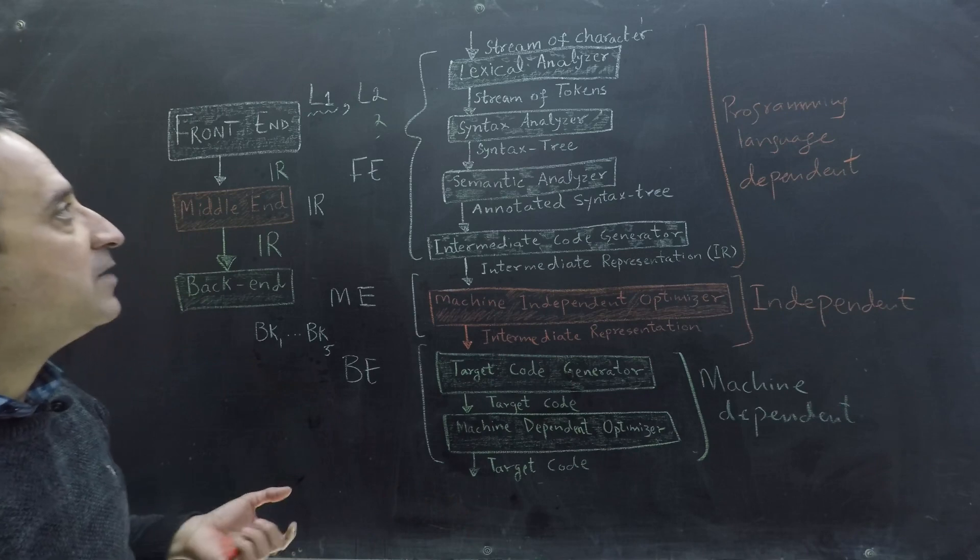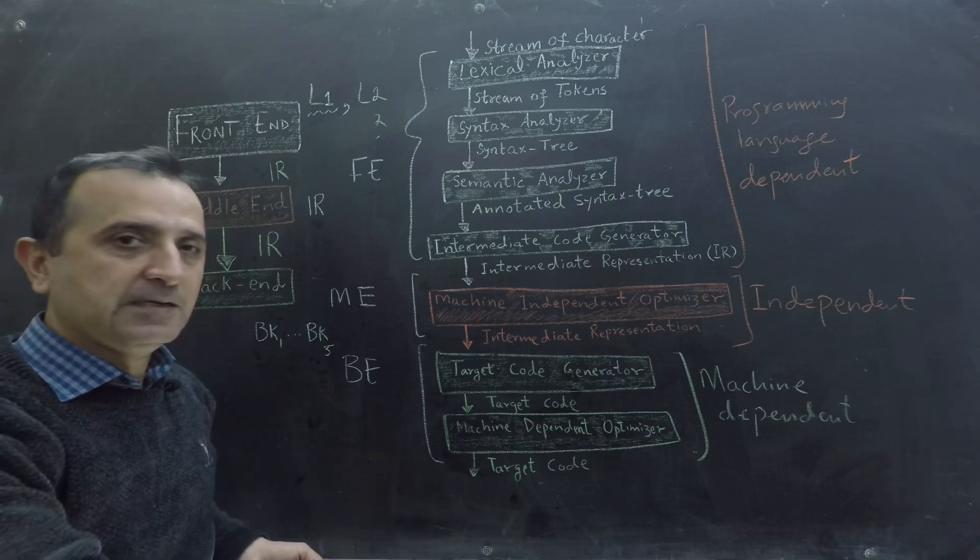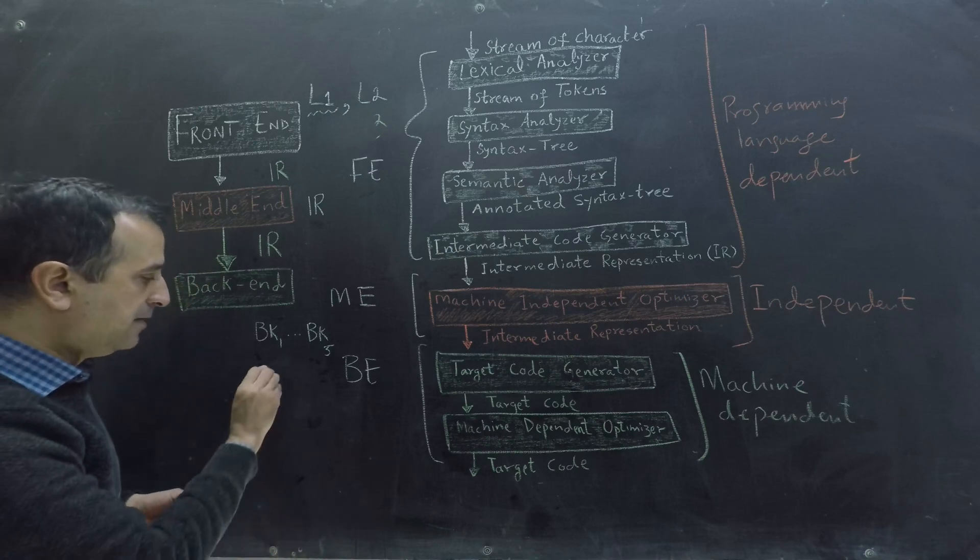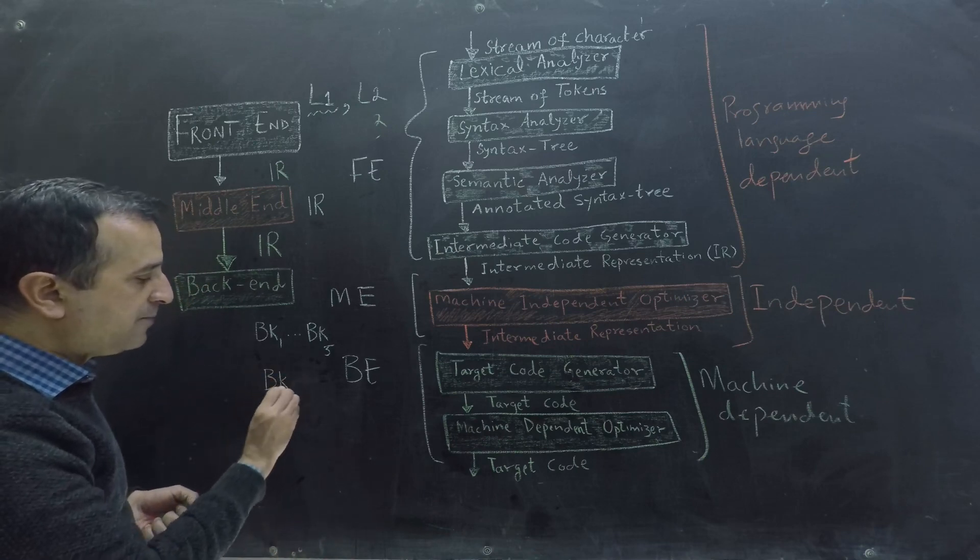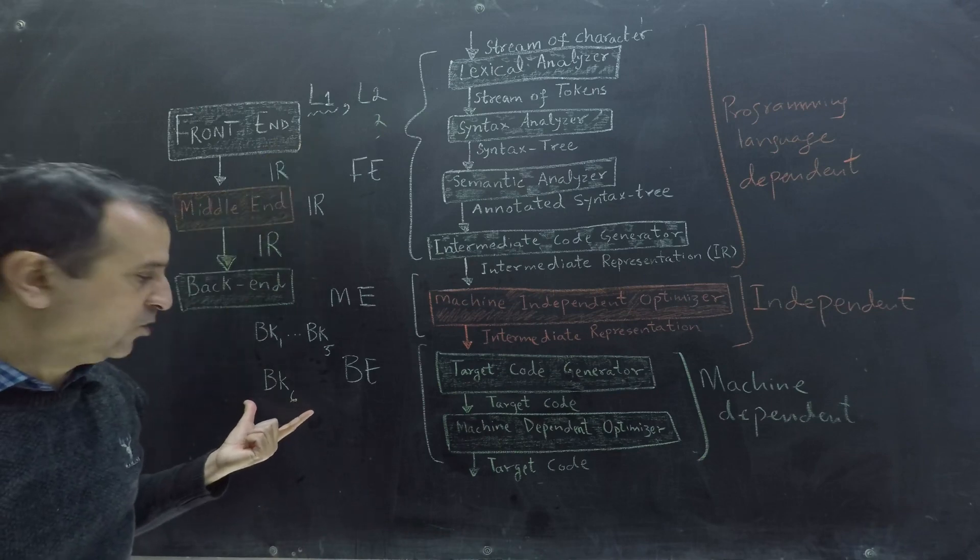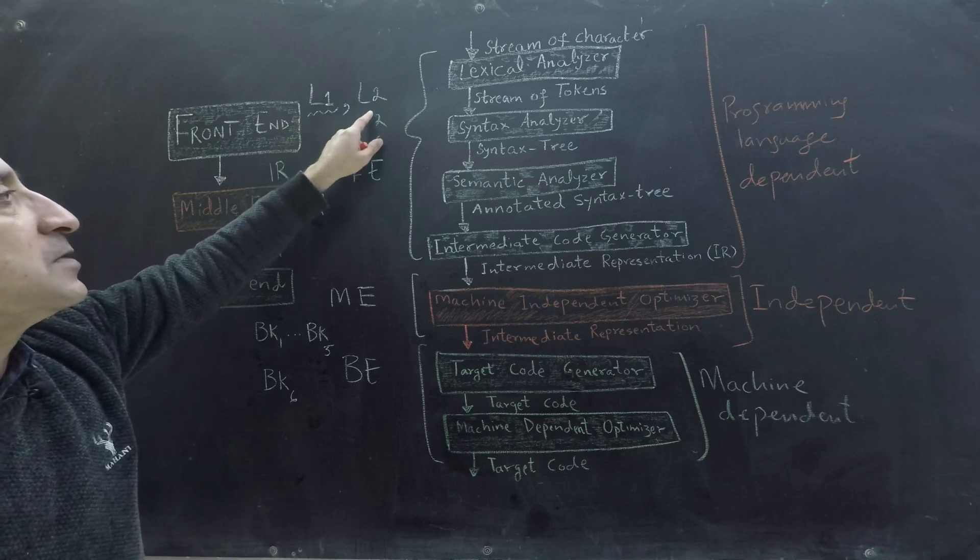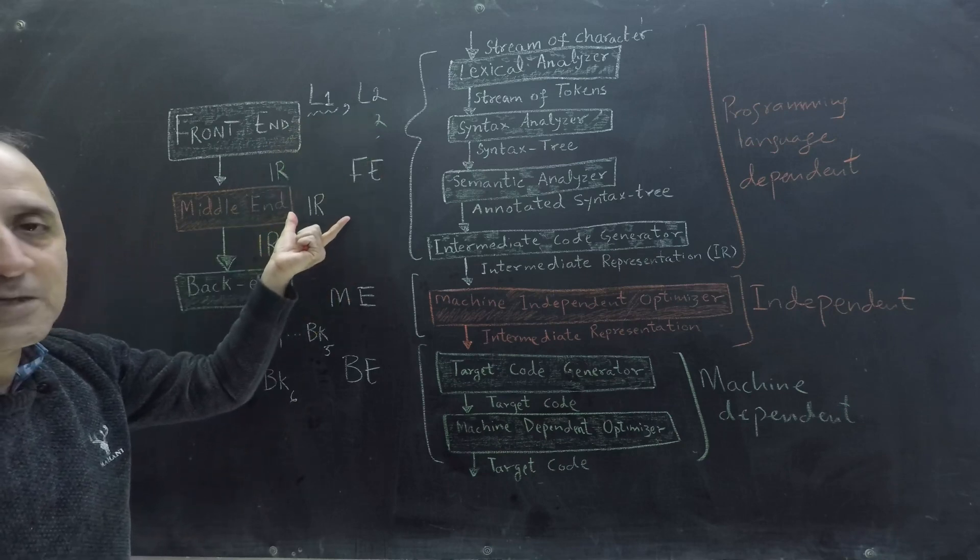However, if I have to support my language in a sixth machine, then I have to write another backend. And by writing that backend, the L1 also gets support in this new machine because L1 and L2 share the same intermediate representation.